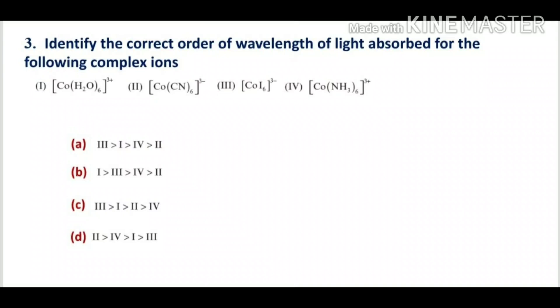So the first position is complex 3 (iodo) and the fourth position is complex 2 (cyano). In between, there are two options: hexaaqua cobalt(III) ion (first complex) and hexaammine cobalt(III) ion (fourth complex). The aqua ligand is weaker than the amine ligand, so the first complex comes second and the fourth complex comes third. Therefore, option A is correct.